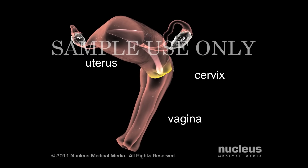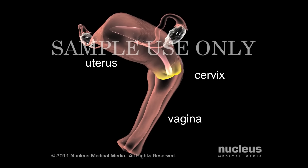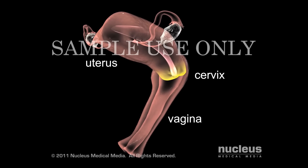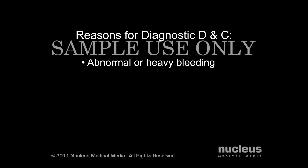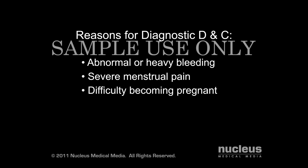The lower part of the uterus, called the cervix, connects the vagina to the uterus. A diagnostic D&C may be performed to investigate the cause of the following conditions: abnormal or heavy bleeding, severe menstrual pain, difficulty becoming pregnant, or abnormal cells found in a pap smear.